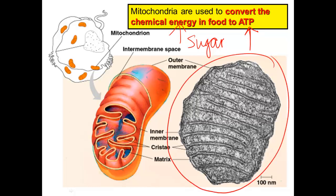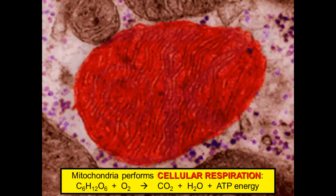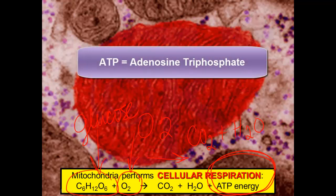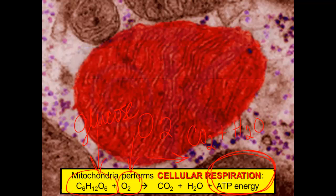This is an electron micrograph picture of a mitochondria, and you can clearly see the cristae — it's very easy to recognize. Mitochondria performs cellular respiration: it takes sugar, which is C6H12O6 glucose, and joins that with oxygen O2. The mitochondria turns those two compounds into carbon dioxide and water, and the whole point is that we are creating ATP energy. ATP stands for adenosine triphosphate, and it's a molecule that helps to carry energy around the body.